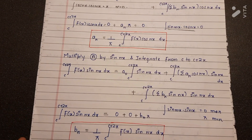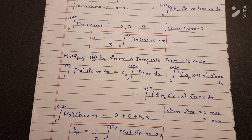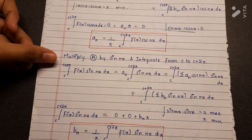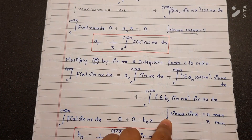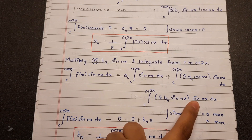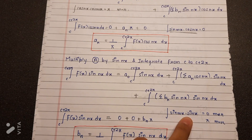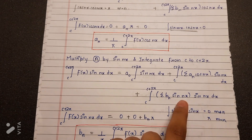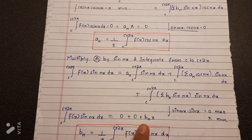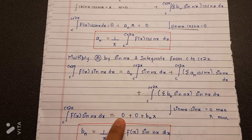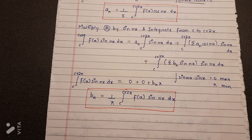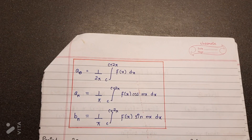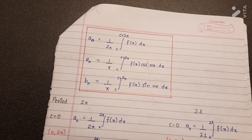For calculating bₙ, since it is the coefficient of the sin term, we multiply the entire Fourier equation by sin nx and then integrate. The a₀ term and the aₙ term both become zero. For the bₙ term, using the formula sin mx · sin nx = π when m = n, this term becomes bₙ · π. So we get: bₙ = (1/π) ∫f(x) sin nx dx from c to c + 2π. These are the three Fourier coefficients we just derived.